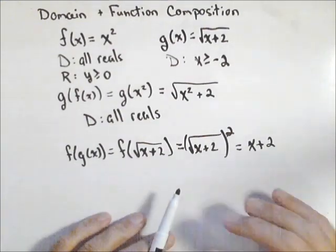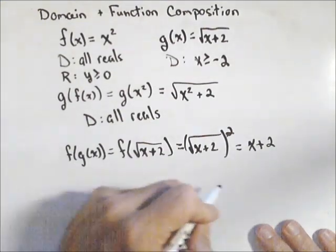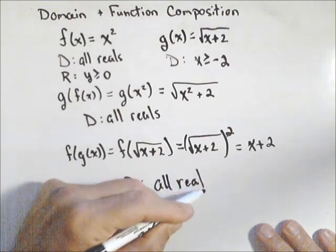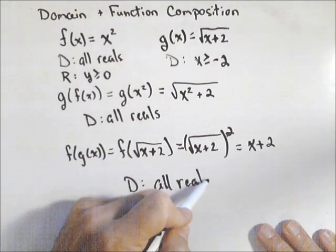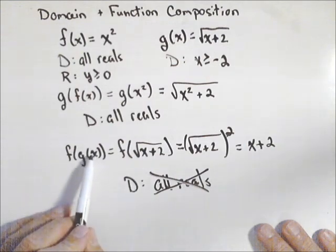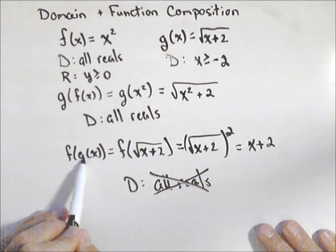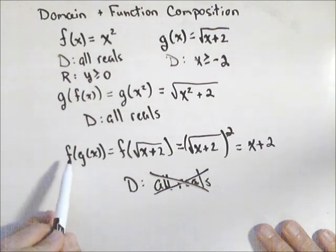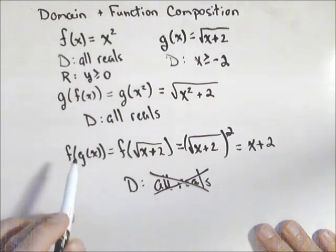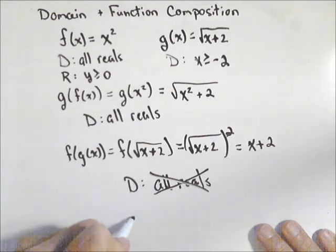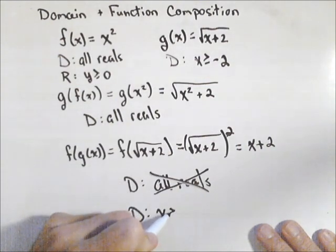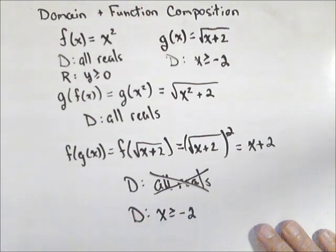Now we know the function x plus two has a domain of all reals. But we're doing a composition. So this does not work for our composition. Because what happens in a composition is x has to go into g first and then into f. So while this function doesn't have any domain restrictions, the composition does. So our domain is going to have to actually be the domain that it was for g, which is x is greater than or equal to negative two.